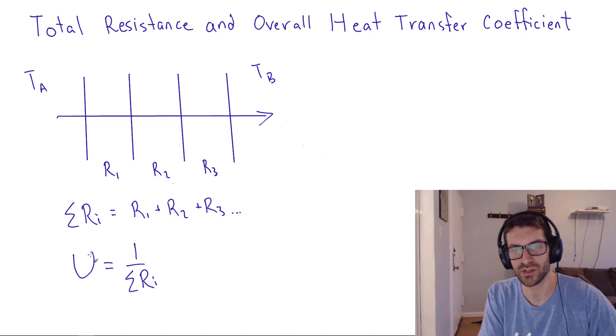The overall heat transfer coefficient is typically given in units of BTU per hour degree F per foot squared. And the units for these resistances would just be the inverse of that.